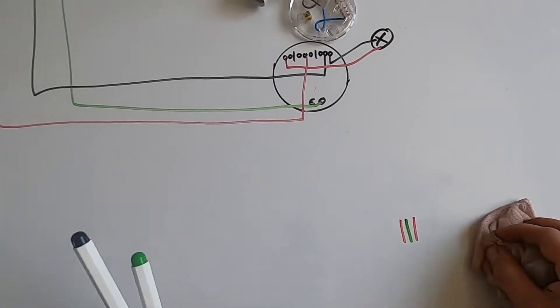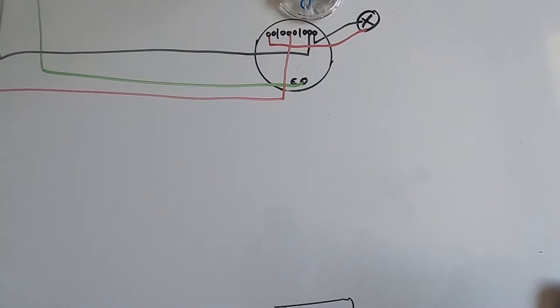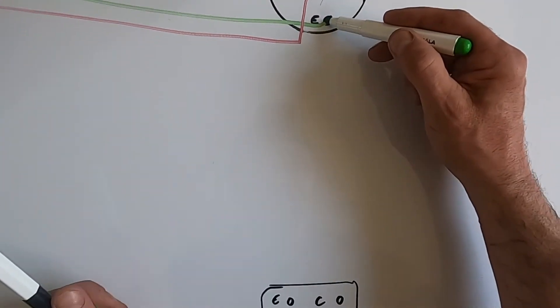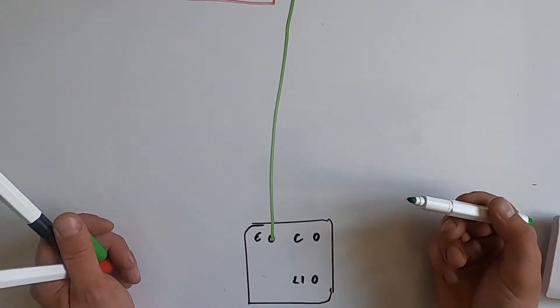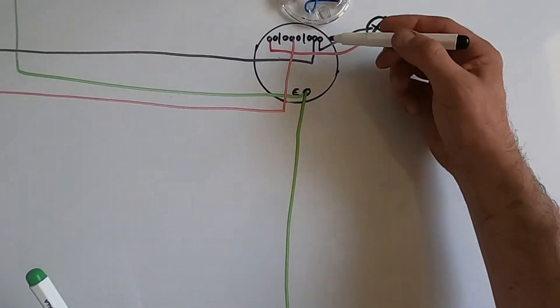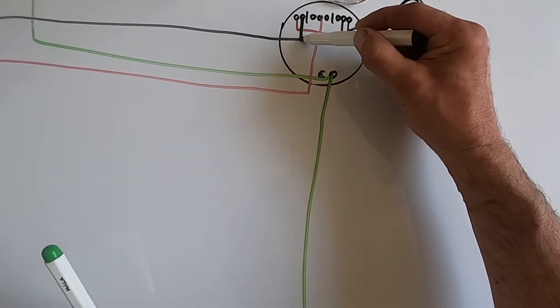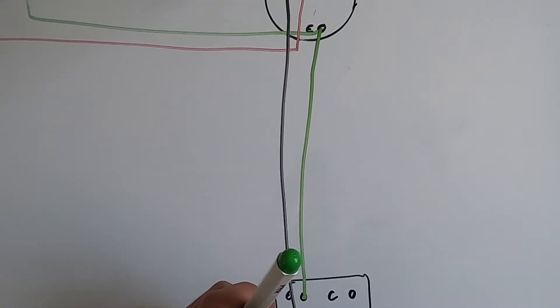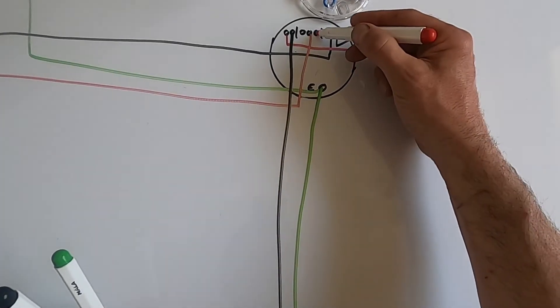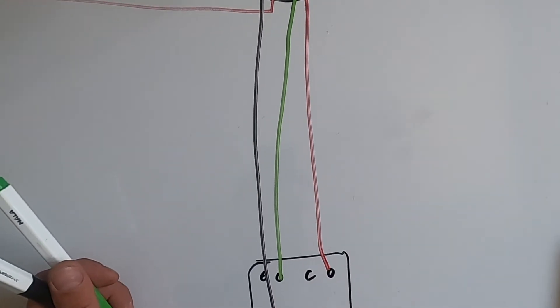But nine times out of ten, people have just used the same cable that they've used to wire the board, so we'll just use the same in this drawing. So we're going to use the earth out of the ceiling rose, that'll come down to the switch. And then the neutral in that cable, we're going to take to the live. And then the neutral - and then the live, sorry, out of that cable will take straight to the common. But then because this is going to be classed as a live, we're going to need sleeving on this live cable.